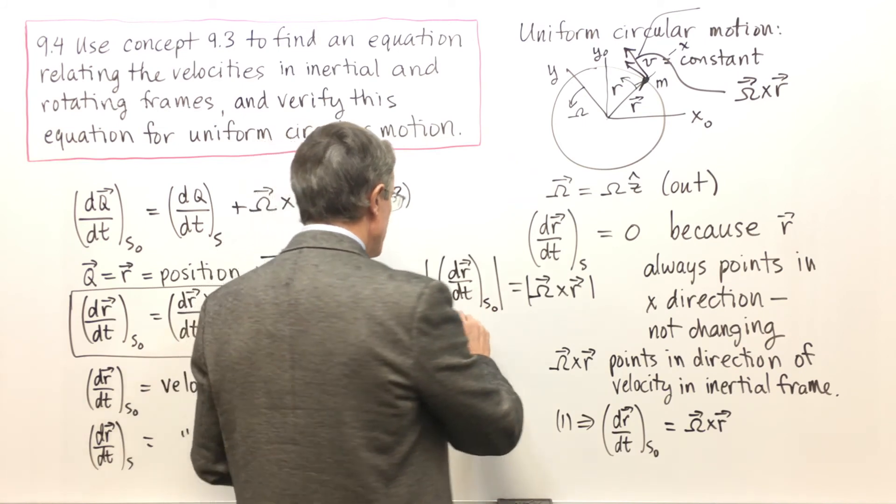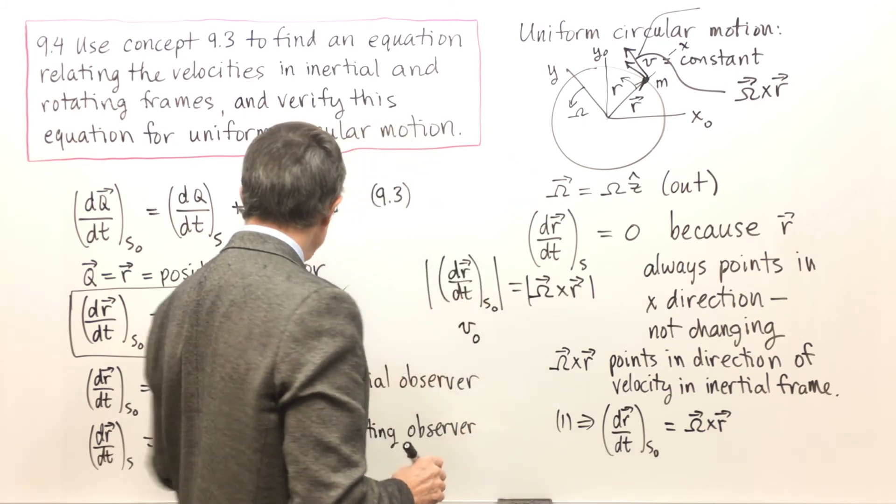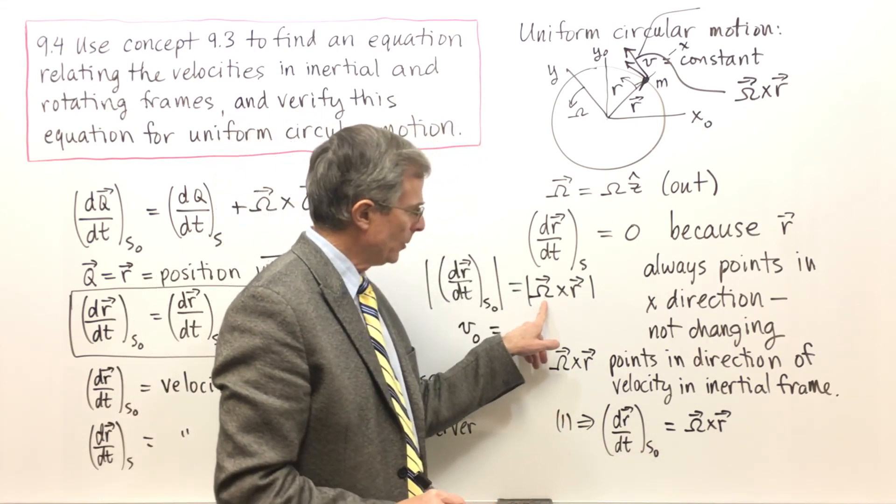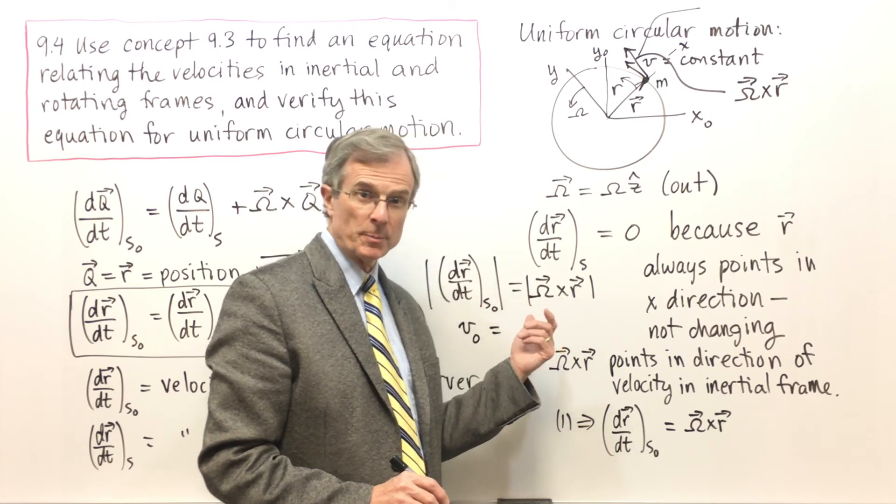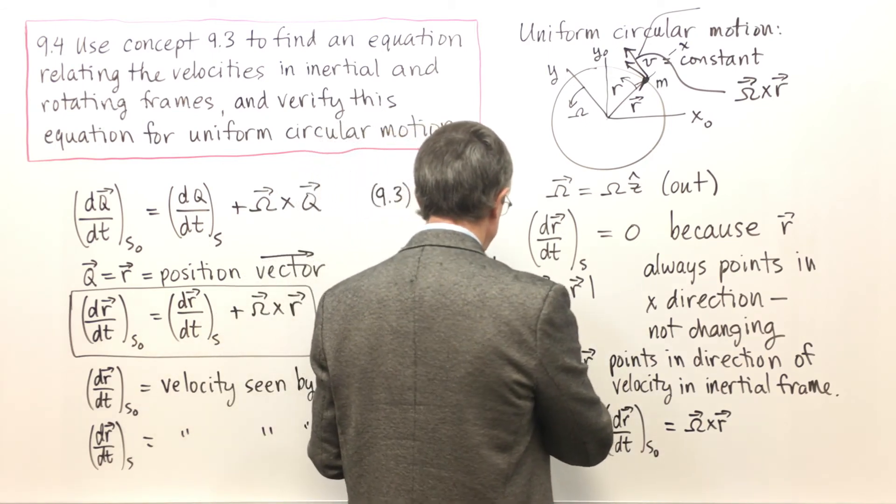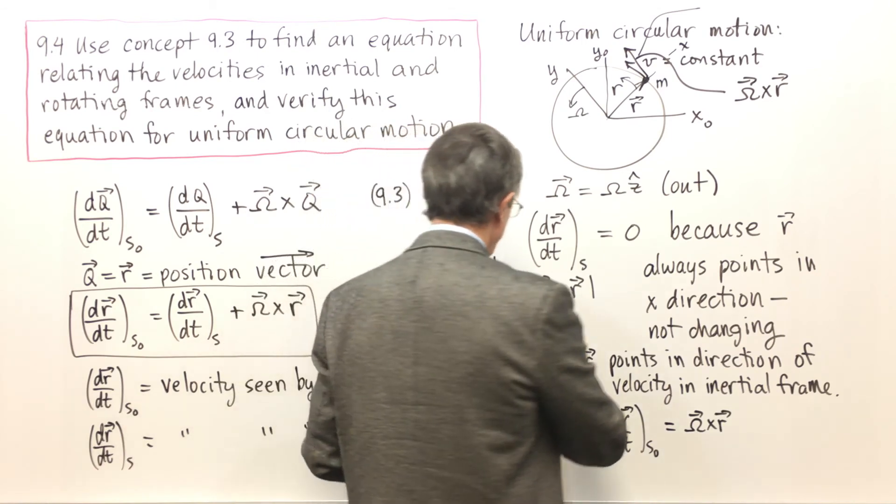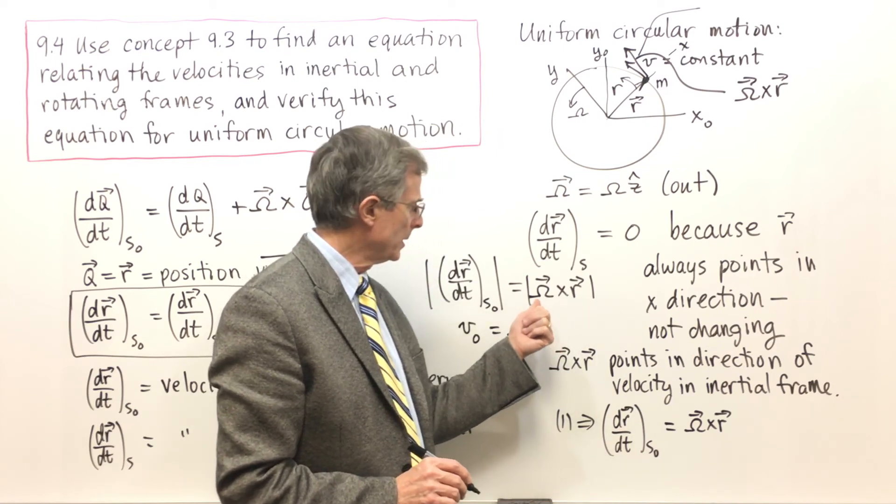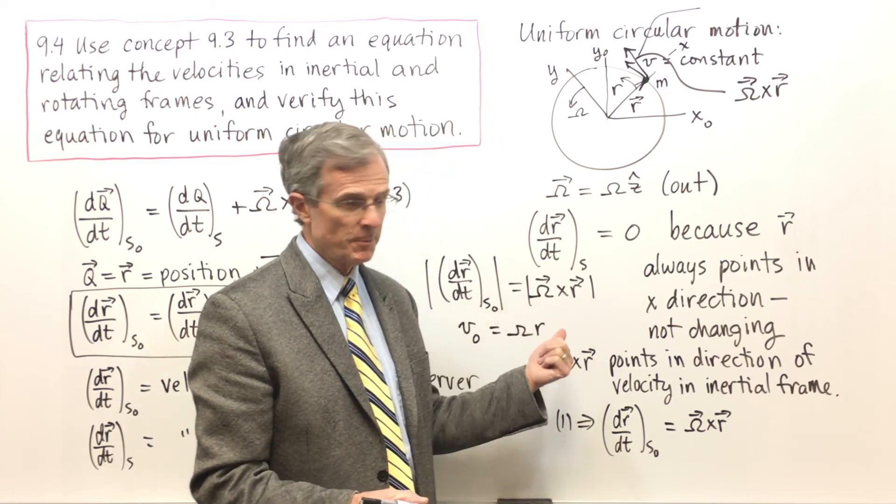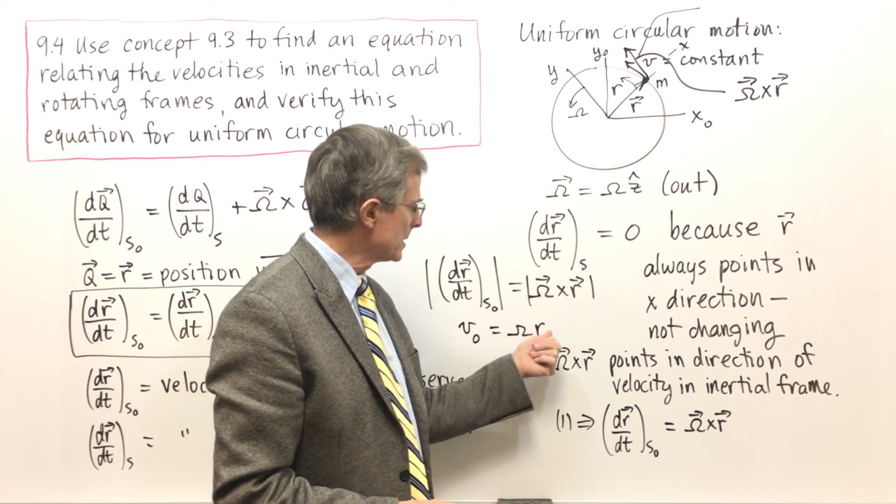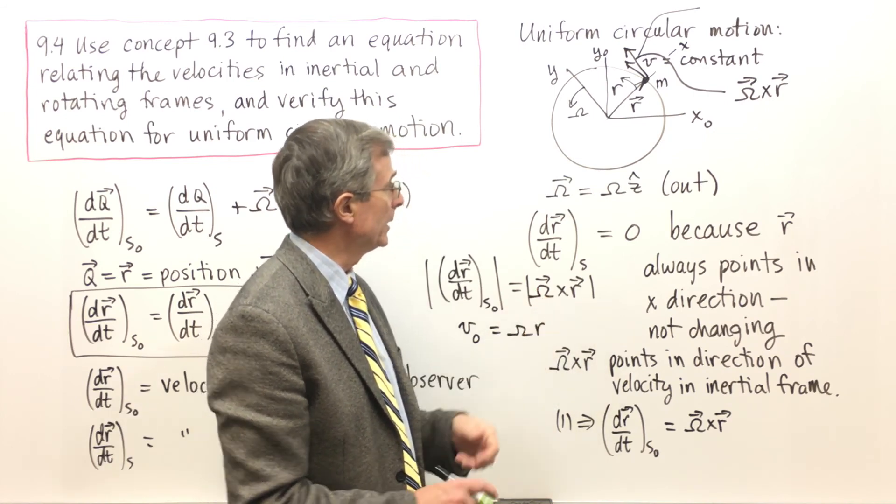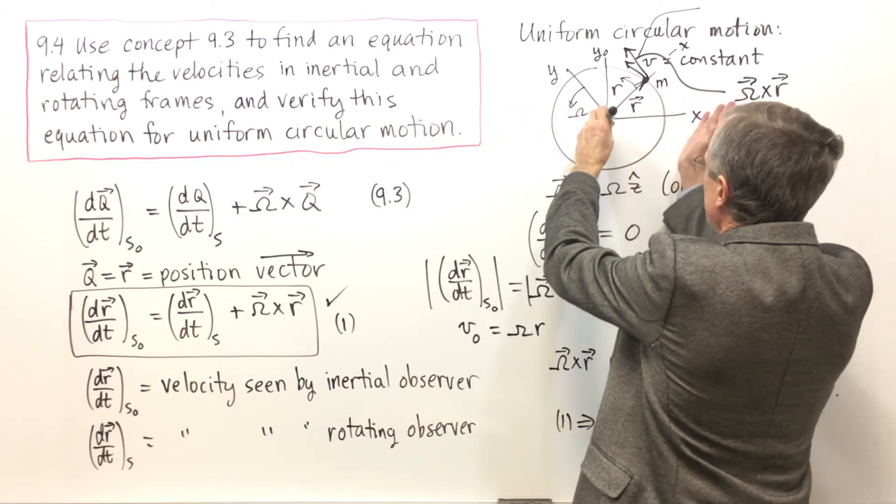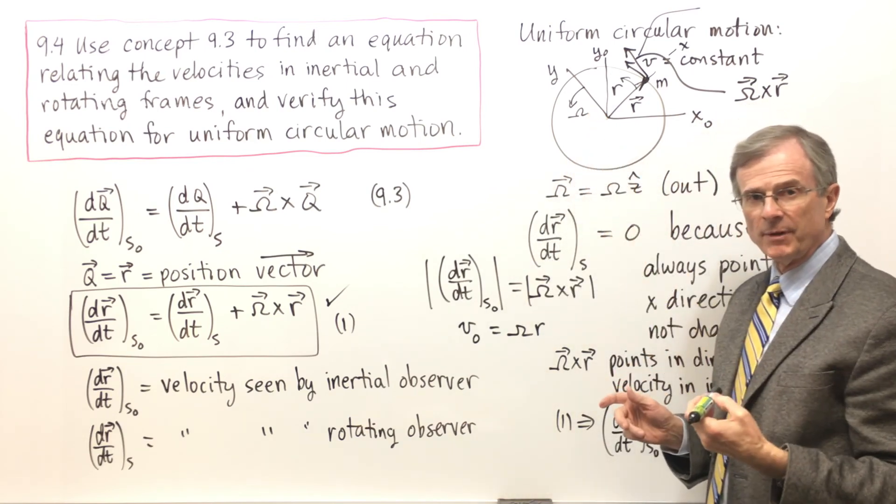This should just be the speed seen by the inertial observer. For omega cross R, to take that cross product I'm going to take the magnitude of the first vector times the magnitude of the second vector times the sine of the angle between the two. We need the sine of the angle between omega and R. Here's omega coming out of the board and here's R. What's the angle between them? It's 90 degrees, and the sine of 90 is one.